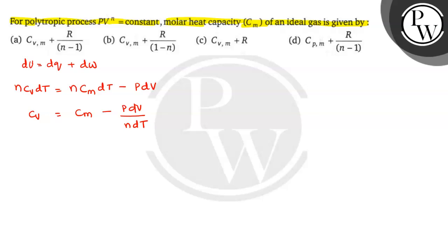I want Cm, so Cm = Cv + PdV/ndT. Assume this is equation number 1.